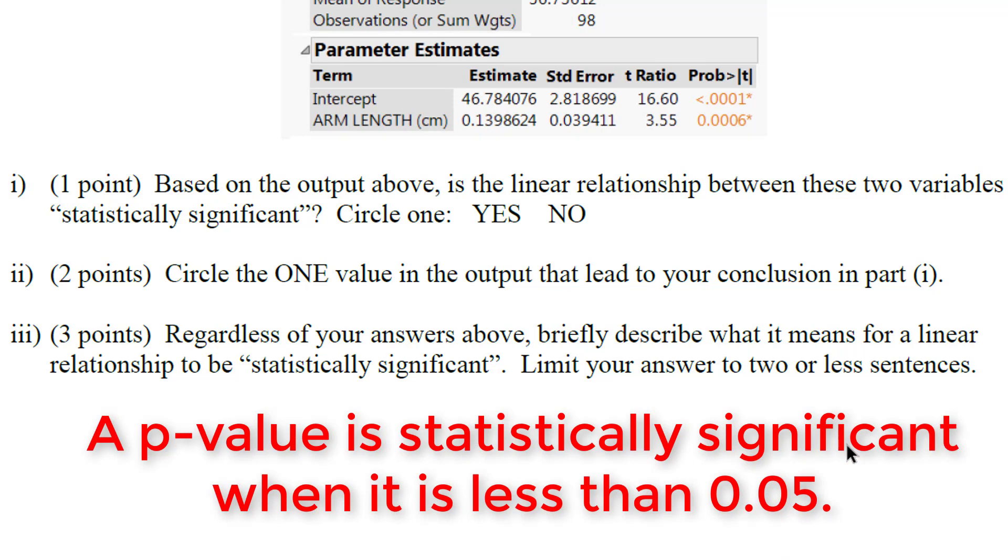So this narrows your choices down to two right here. So we have two p-values: the p-value of the intercept and the p-value of the slope.